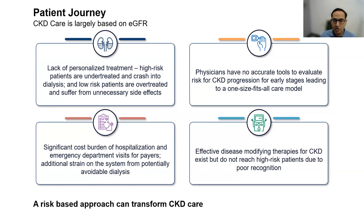Something we've shown again is that there's better use of risk tools in nephrology now because we've been talking about it for a long time. But outside of nephrology — in primary care, endocrinology, and cardiology, where a lot of early-stage CKD lives — there's really no use of tools to evaluate risk for CKD progression. So everybody gets treated according to whatever their GFR is, leading to a one-size-fits-all care model. RAS inhibitor use, statin use, and SGLT2 inhibitor use doesn't seem to matter what your risk of progression is.